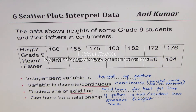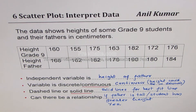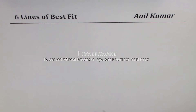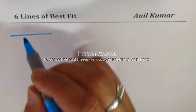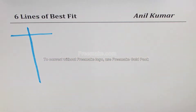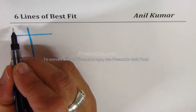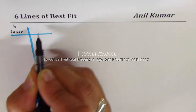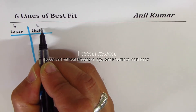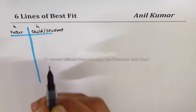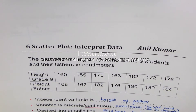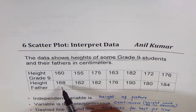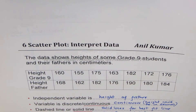In the second part of this video, we'll write down the data and plot the scatter plot. We'll copy the information given to us regarding height of father and child. So we'll write height of father and height of child, which in this case is a student. Both heights are in centimeters.